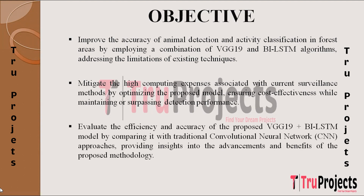The objective also includes evaluating the efficiency and accuracy of the combination of VGG-19 and BiLSTM model by comparing it with traditional CNN approaches. The goal is to provide insights into advancements and benefits, showcasing the proposed model's superior performance in animal detection and activity classification within forest environments.